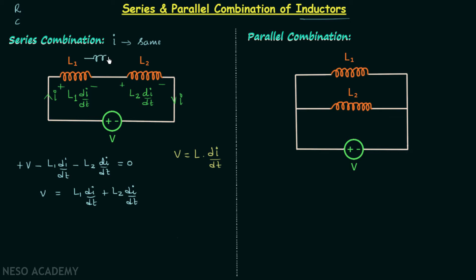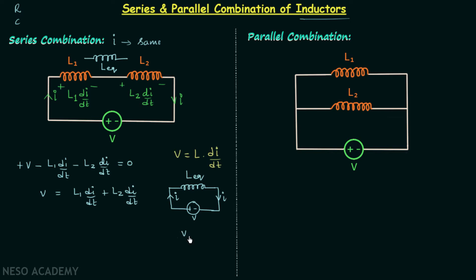We want to calculate the equivalent inductance, so we should have one equivalent inductor in place of these two inductors. Let's say the equivalent inductance is L_eq. When we have the equivalent inductor in place of the two inductors, we have one inductor with inductance L_eq, with voltage V across it and current I through it.